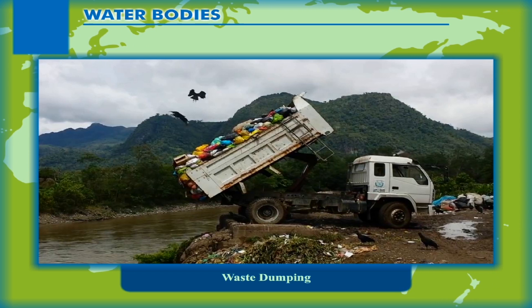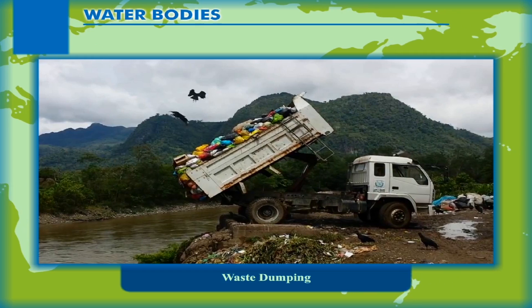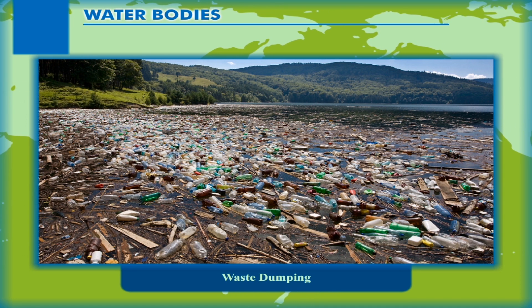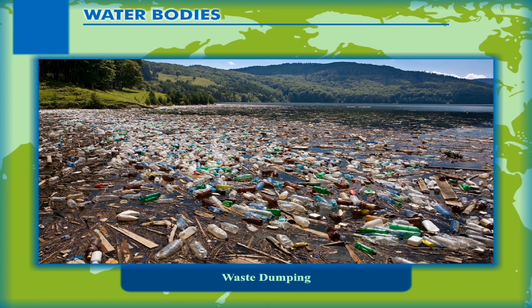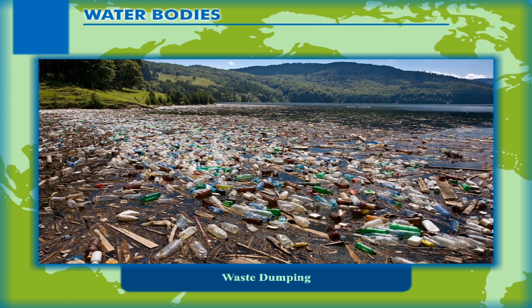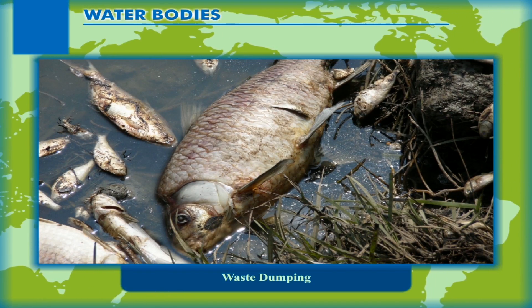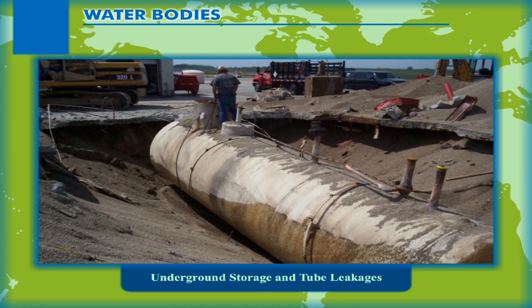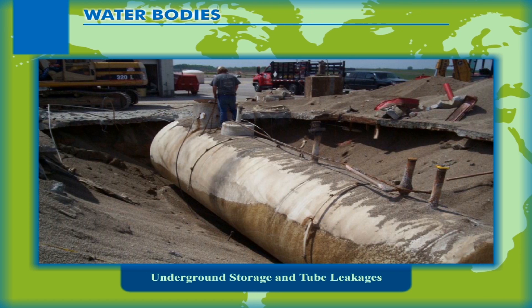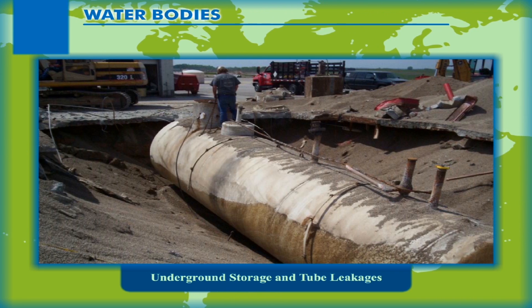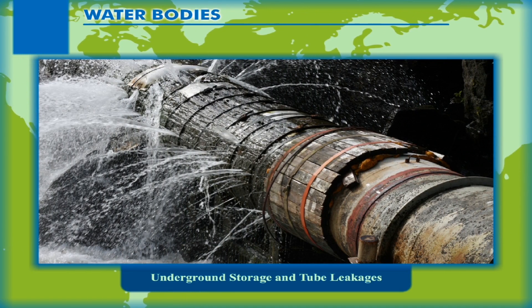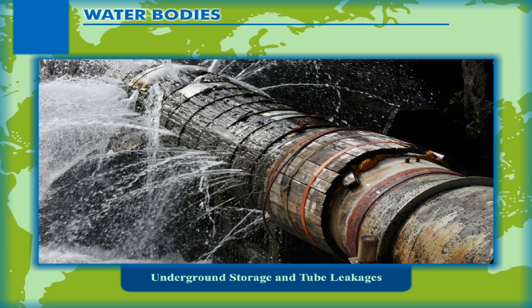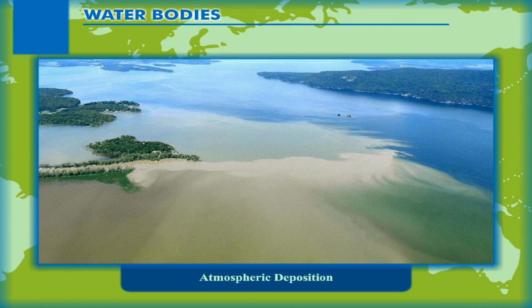Waste Dumping: In some places, waste from hospitals, factories, and homes is dumped into water bodies. These wastes can take a long time to decompose, or may not decompose at all, such as plastics. These pollute water bodies, and when they end up in the sea they harm sea animals and cause many water animal deaths. Underground Storage and Tube Leakages: Many liquid and petroleum products are stored in metal and steel tubes underground. Over time they rust and begin to leak, contaminating the soil, and the liquids end up in nearby water bodies.